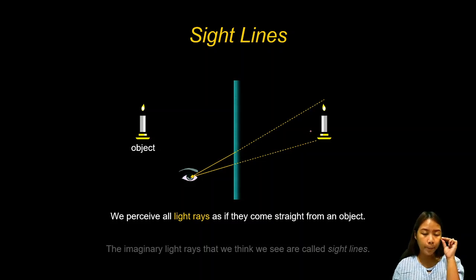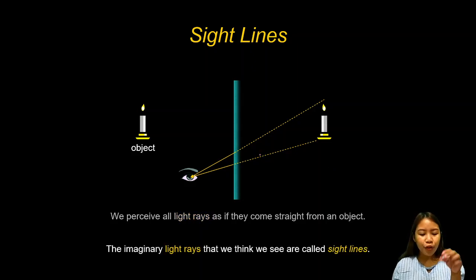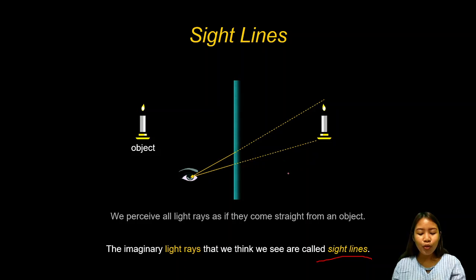That's why you can see the image inside the mirror. You can perceive this image because of the light rays that come from the object. The broken lines shown are imaginary lines that allow us to see the image inside the mirror — these are called sight lines. Because of sight lines, we can see those images inside the mirror.